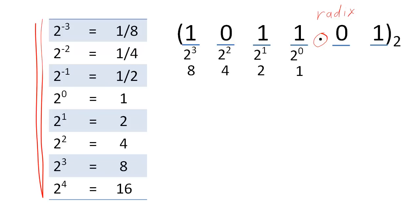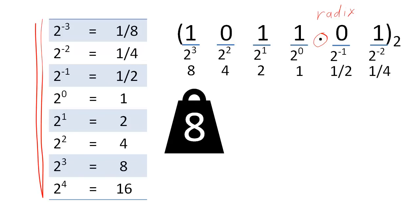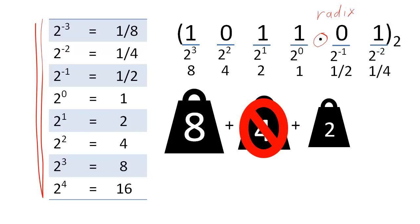For example, the one in the farthest left position tells us to add one eight to the value of the number. The zero in the next position tells us to add zero fours. The one in the next position tells us to add one two to the total value of the number, and so forth.